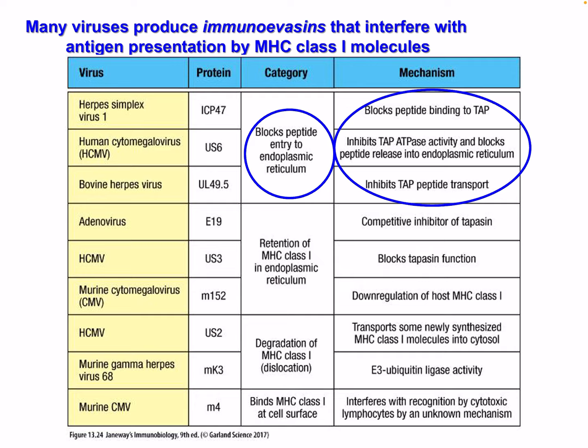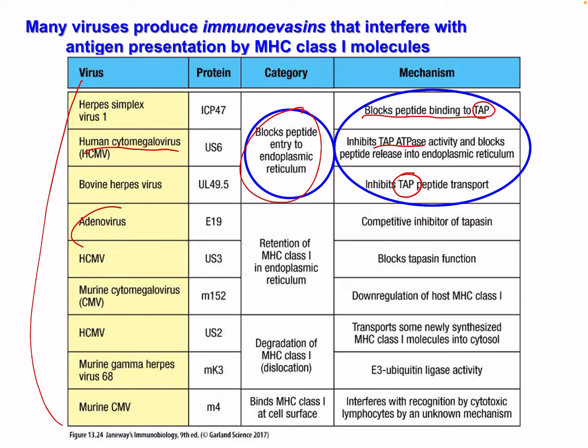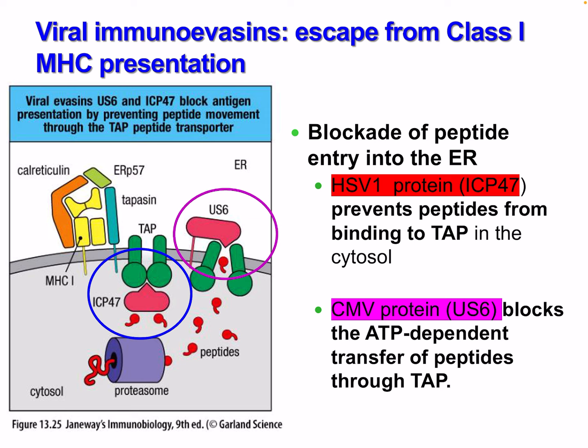This is where NK cells and their activity become relevant — many pathogens are able to evade this, which is why T helper cells are so important. For example, Herpes Simplex Virus 1 blocks the binding of TAP, which is an important transport protein, blocking entry of peptides into the ER. Human cytomegalovirus blocks TAP as well. TAP appears to be a frequent target for viral immunoevasion. Adenovirus also acts as a competitive inhibitor for tapasin, which is part of the peptide loading complex.